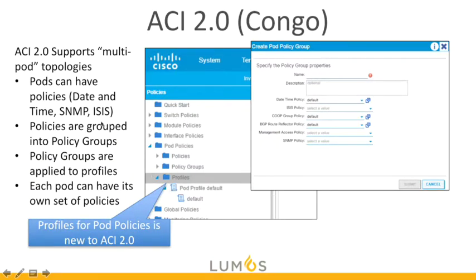Each pod can have its own unique set of settings, such as date and time policy, group protocol, and BGP route reflector policy — since we'll have different route reflectors in each pod as well.